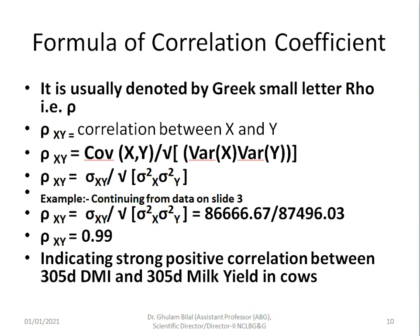The formula for correlation is slightly different from regression. The numerator is the same — the covariance of xy — but the denominator is the square root of the variance of x multiplied by the variance of y. We have already estimated variance of x and variance of y, so it is very easy to calculate correlation. The formula is: ρxy equals σxy divided by the square root of (σ²x times σ²y).